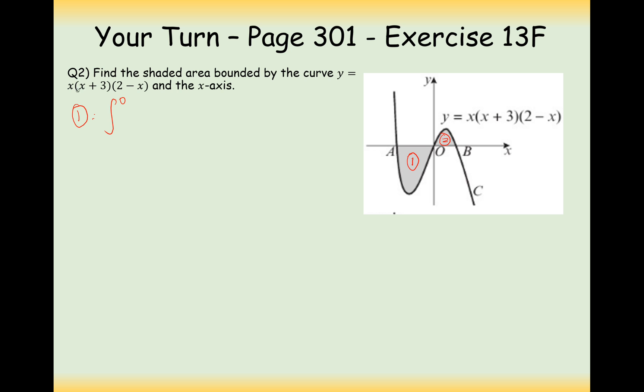And now let's work out these boundaries. So we've got x times x plus 3 times 2 minus x. So that point there is obviously going to be 2. And this point here is obviously going to be minus 3. So it's between 0 to minus 3 of, let's expand these brackets. So it's going to be x squared plus 3x for the first bracket and expanding that with 2 minus x. So we're going to get minus x cubed plus 2x squared minus 3x squared plus 6x. So it's going to be minus x cubed plus, we'll make it minus x squared in total, plus 6x dx.